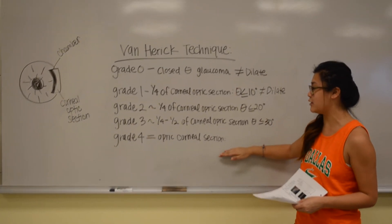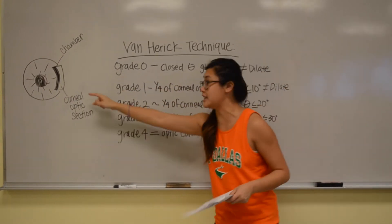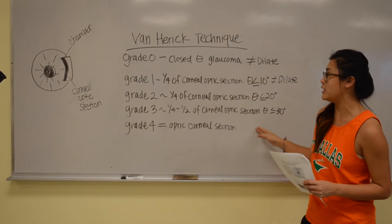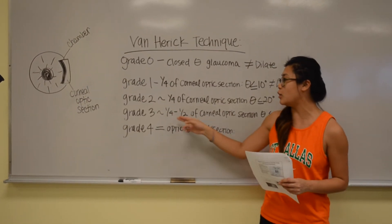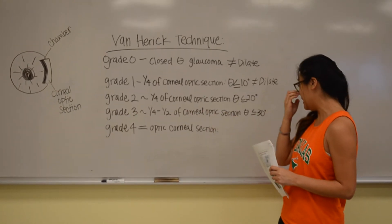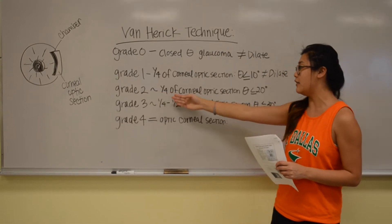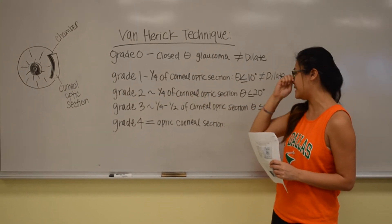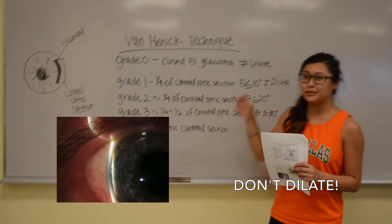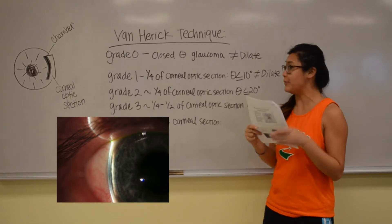We want to have a grade 4 where the chamber is equal to or greater than the corneal optic section — there's a picture right here. Grade 3 is where the chamber is a quarter to half the width of the corneal optic section. Grade 2 is when the chamber is a fourth of the corneal optic section. When we get to grade 1 or grade 0, we don't want to dilate, because the angle is so small — if we dilate, it will just close the angle completely, and we don't want that.